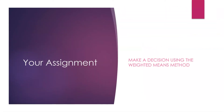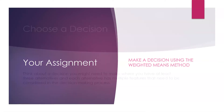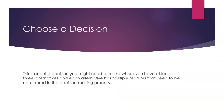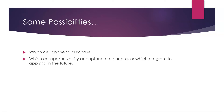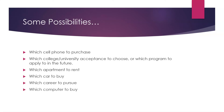Your assignment is to make a decision using the weighted means method. You need to choose a decision where you have at least three alternatives, and each alternative has multiple features that need to be considered. Some possibilities include which cell phone to purchase, which college or university acceptance to choose, which programs to apply to in the future, which apartment to rent, which car to buy, which career to pursue, or which computer to buy.